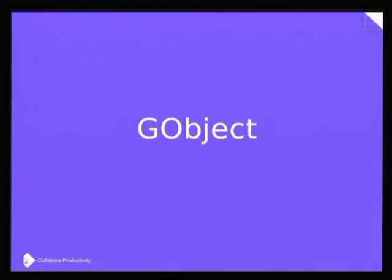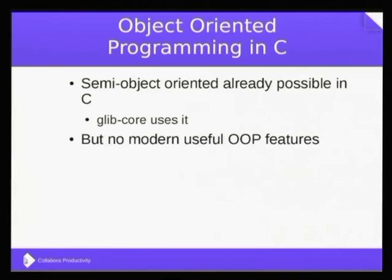Now I will talk about GObject — what exactly it is and how the widget I would be talking about is a GObject class. Semi-object-oriented programming is kind of already possible in C — for example, glib core uses it. But there are no modern useful OOP features if you want to do that through plain C, which is really difficult. GObject comes to the rescue.